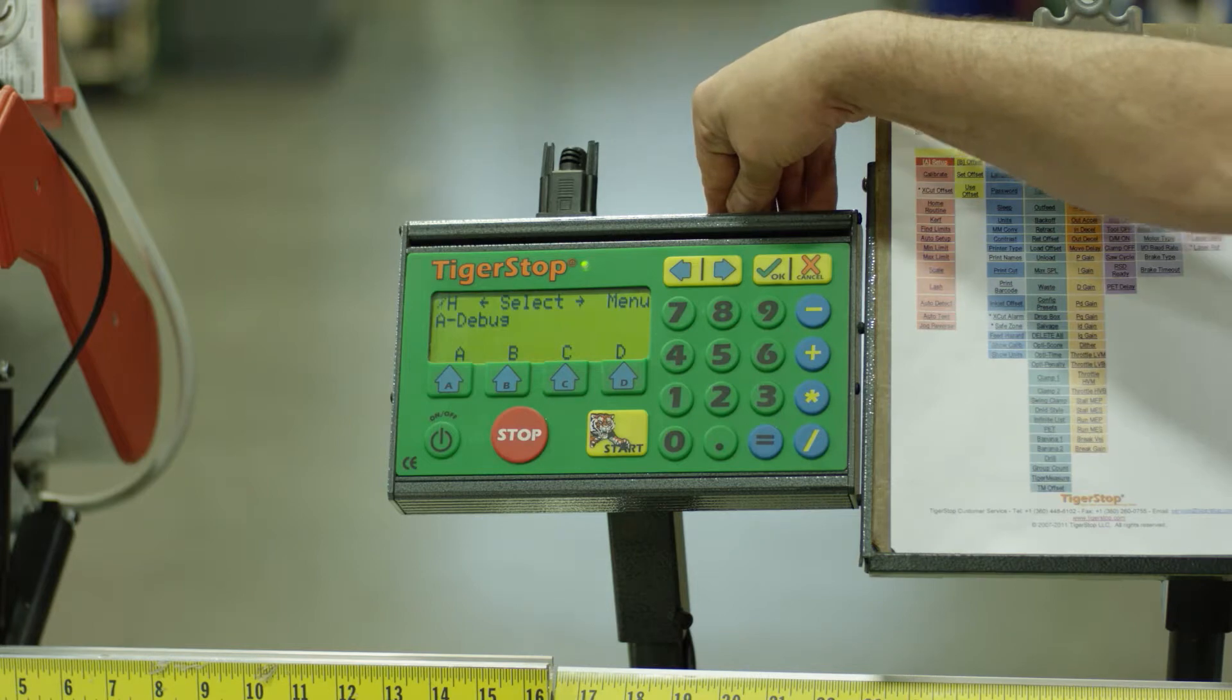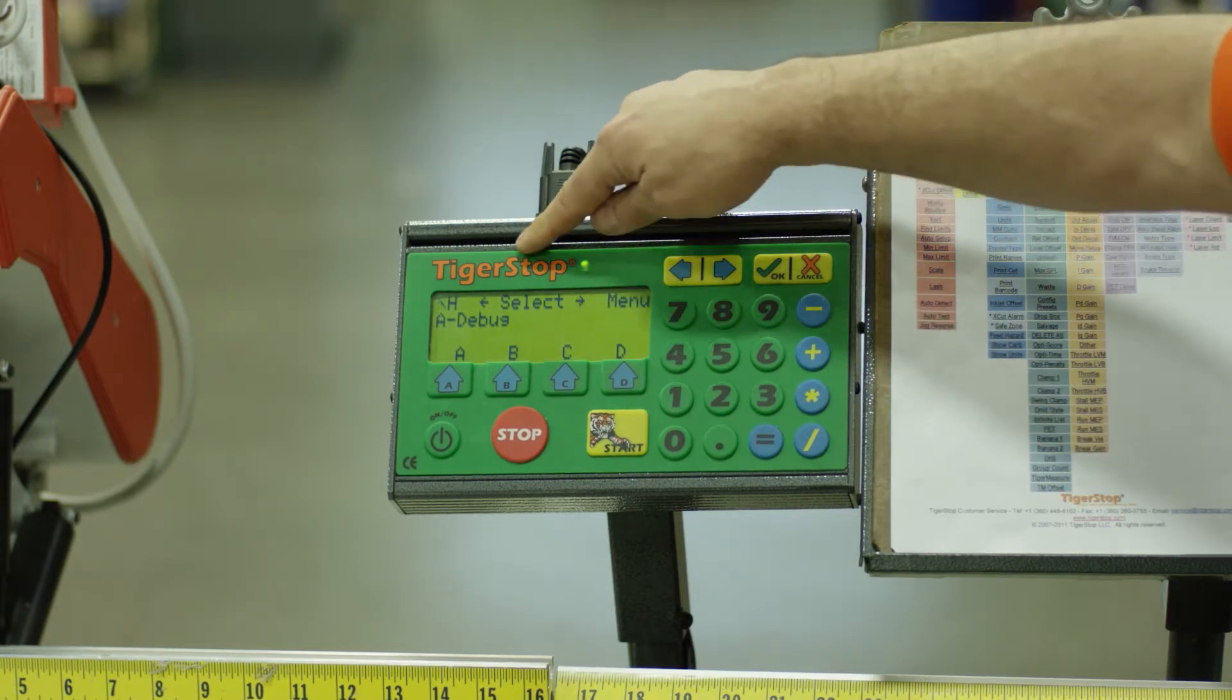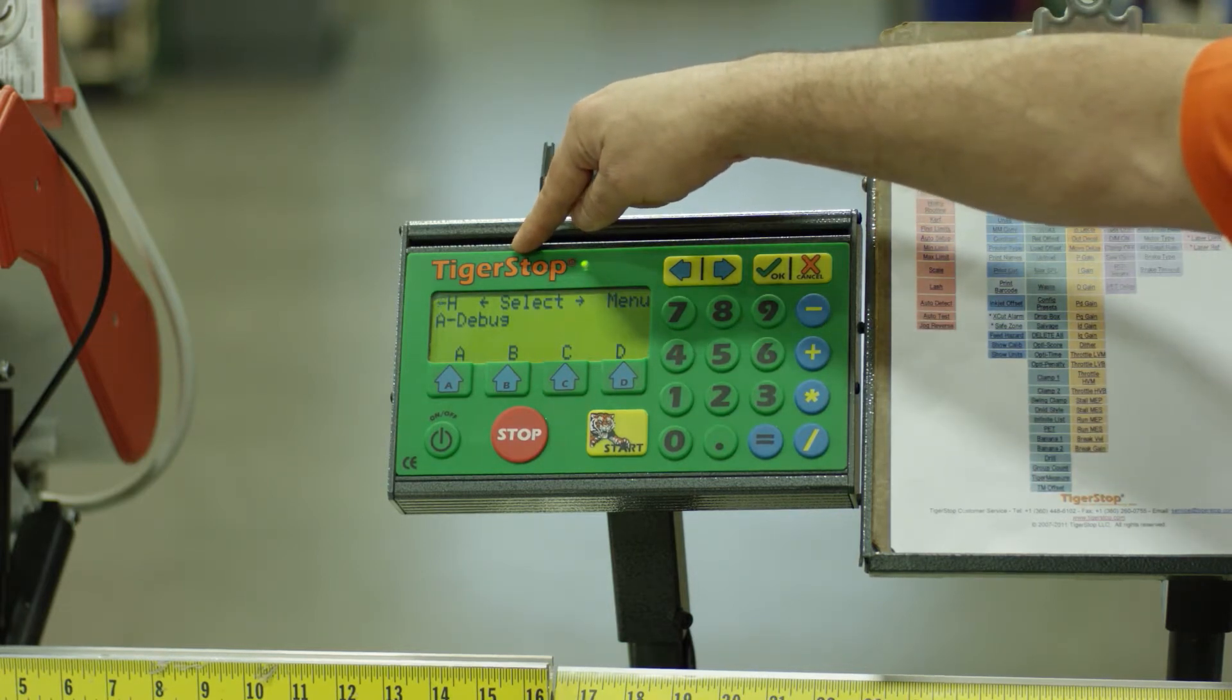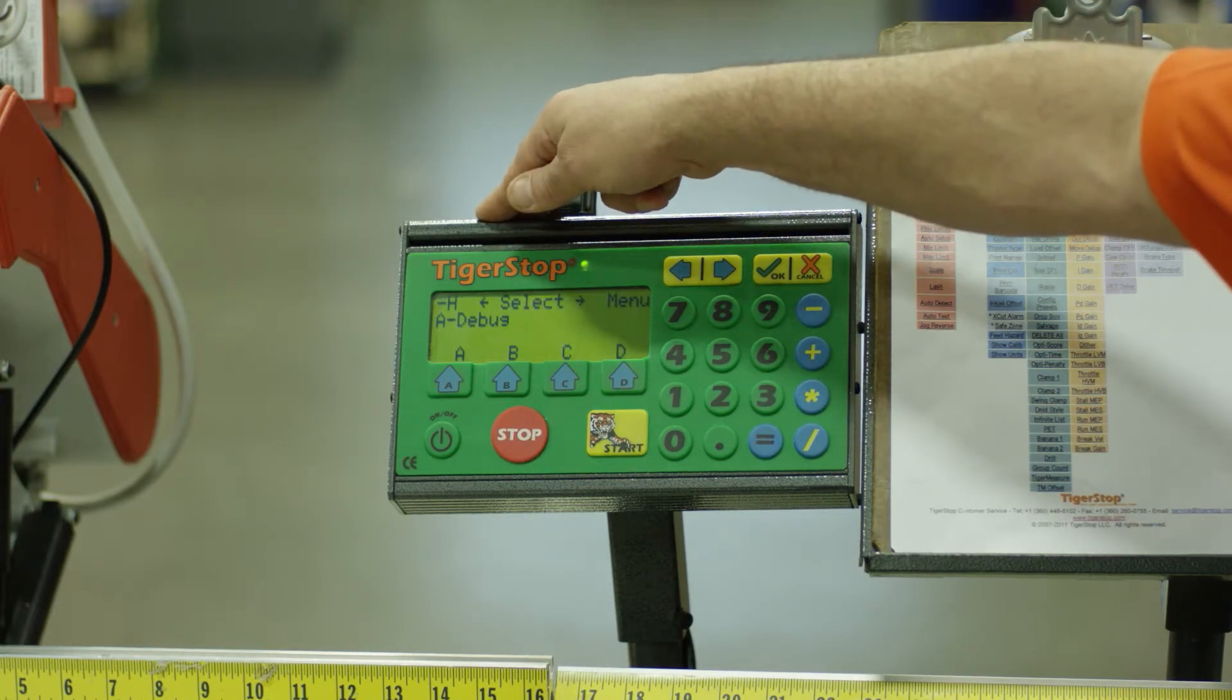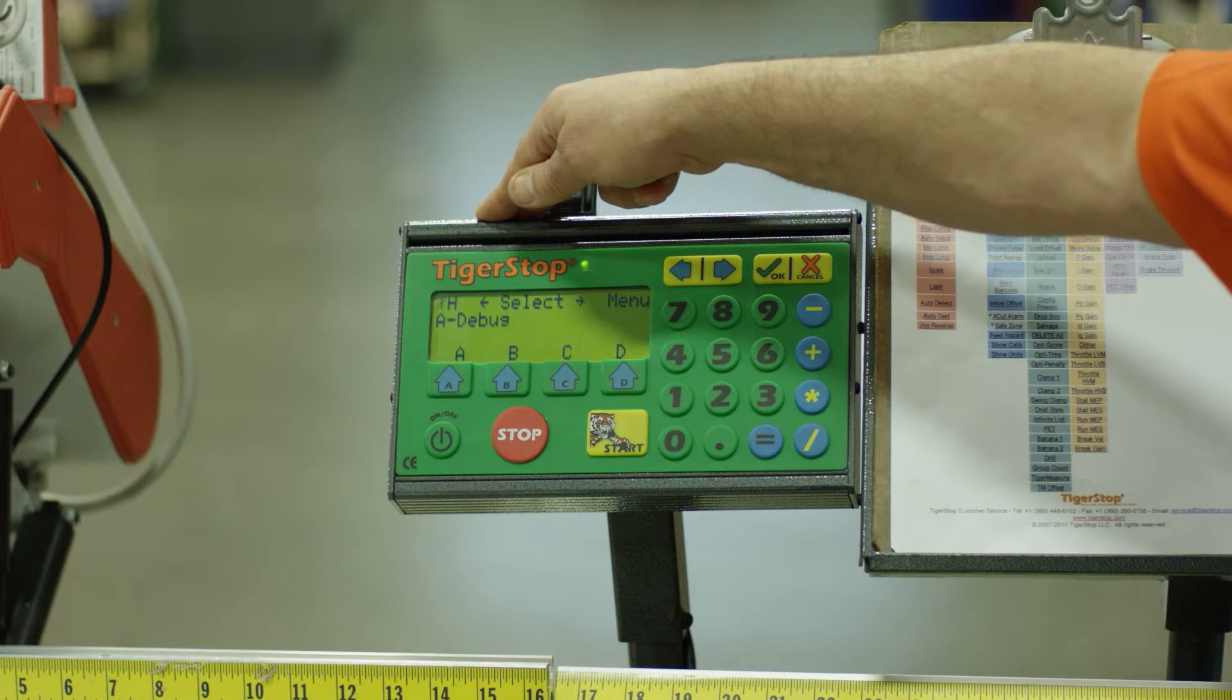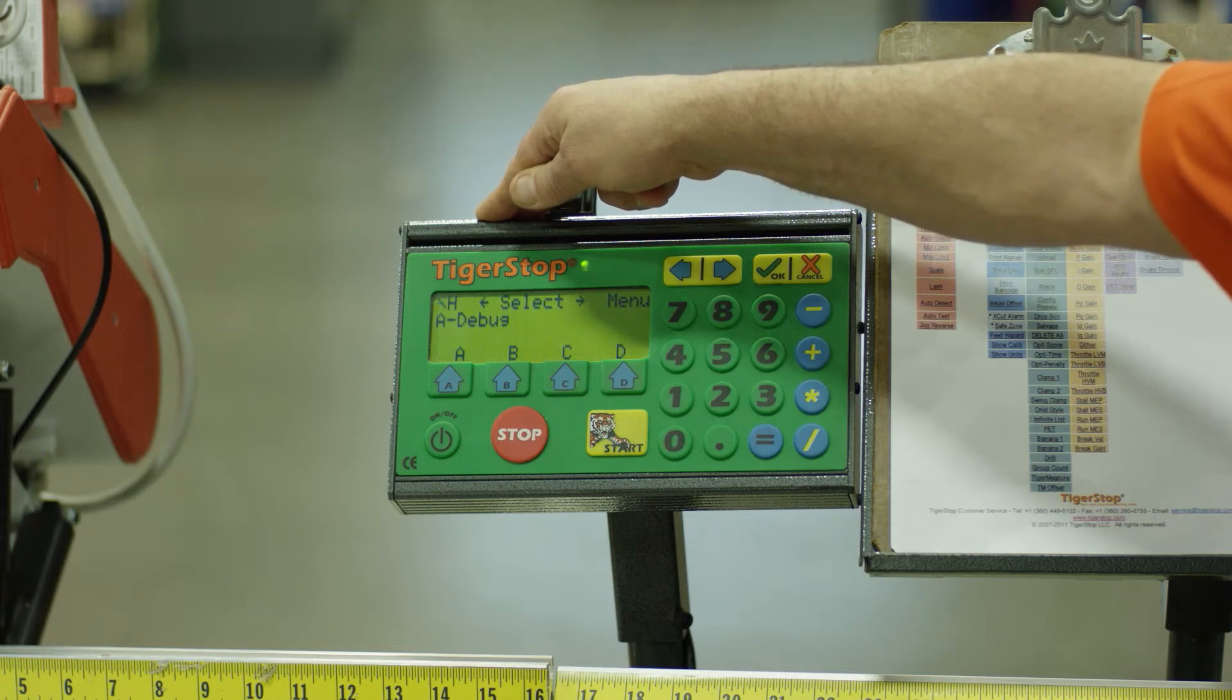Going ahead and pressing the button one more time to the right brings me up to the third screen or menu called the debug menu. This menu is the one that I suggested earlier. Accessing this should be done with a certified Tigerstop technician or the Tigerstop customer service department.